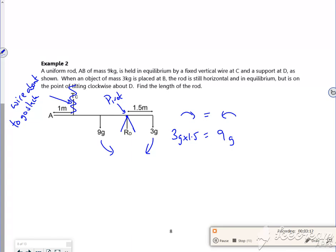Does it say... ah no, I want the length of the rod. So if I call this distance here x, that's going to be 9g times x. So the g's go. I've got 4.5 equals 9x. So I've got 0.5 meters, that's the length of x.